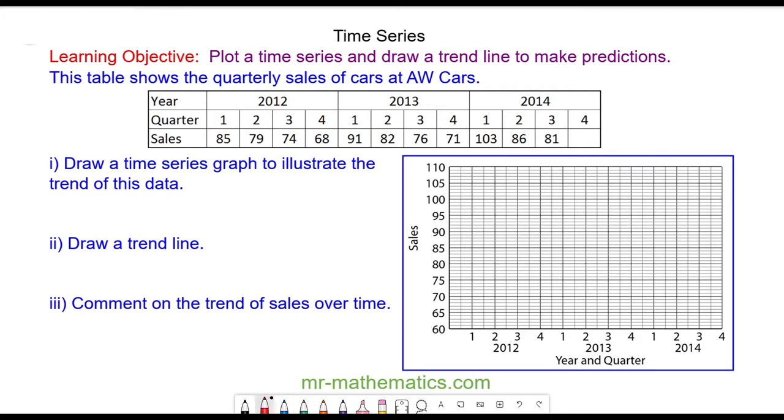So we begin by plotting the first quarter in 2012 with a sales value of 85 which is here. And then quarter two with a sales value of 79, quarter three with a sales value of 74, and the fourth quarter with a sales value of 68.